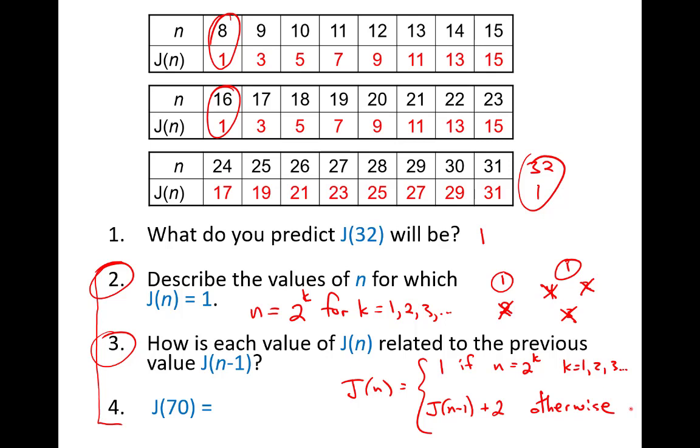And I'll just say the word otherwise here in my piecewise function. All right, so that brings us to J seventy, and I think the answer is thirteen. So I'll let you do the work for that and see if you can figure that out. Remember, I think J of sixty-four is going to be one. So work it out from there.